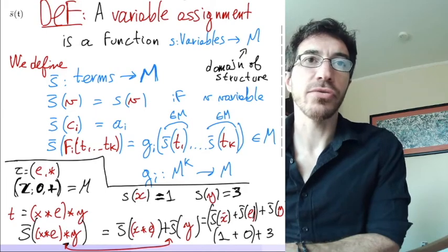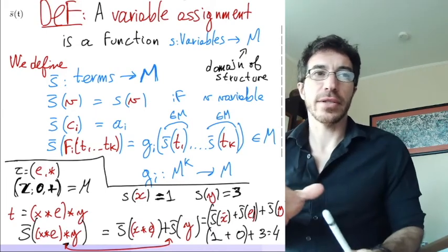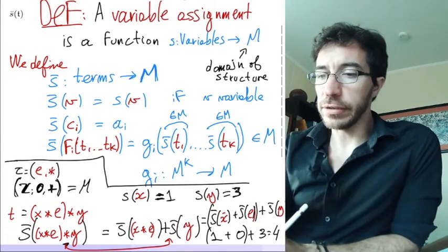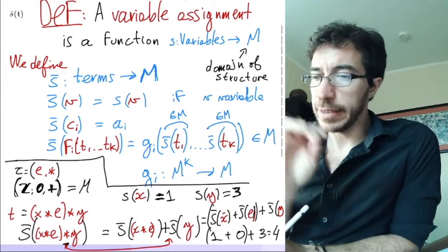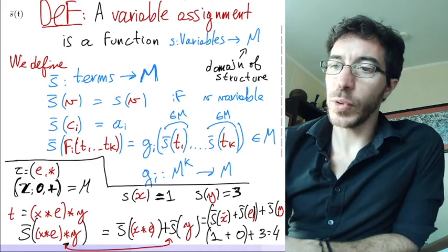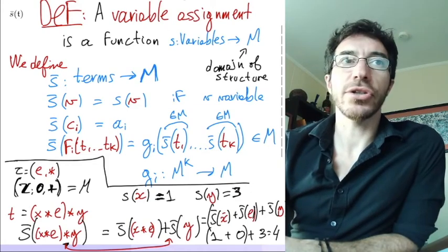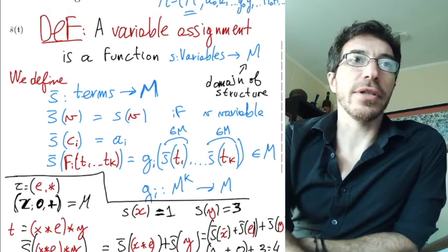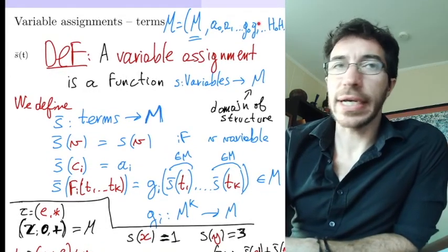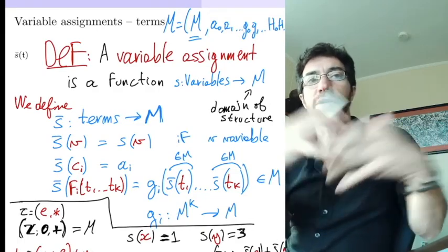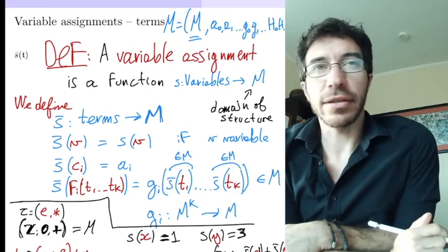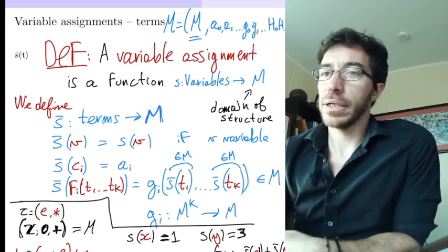So that's how variable assignments work for terms. So now if we know how to assign all the variables in a term to elements of M, then M, the structure, tells us how to assign the constants. These are the constants. And it tells us how to assign the functions. So then we can interpret everything in the term. And the term is going to represent an element from M. Good.